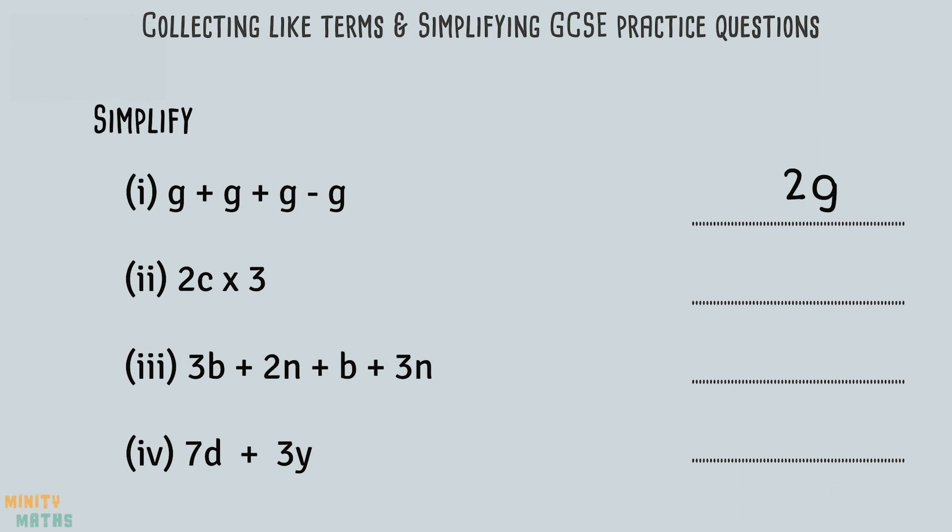The second question asks us to multiply 2 lots of c by 3. For this, we can simply multiply the coefficients together and make sure we include the c. Essentially, we have 3 lots of 2c, so we have 6c.